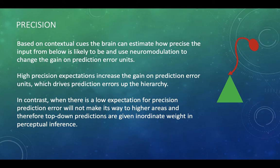So high precision expectations, expectations that there's going to be nice high precision data, will increase the gain on prediction error units. So high gain on the prediction error units will drive prediction errors up the hierarchy.